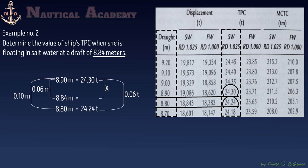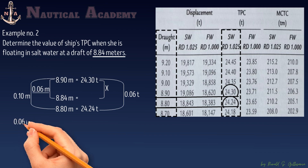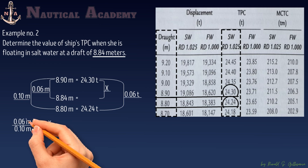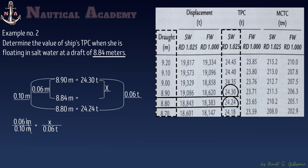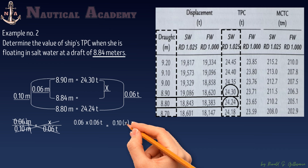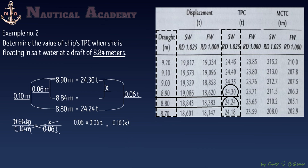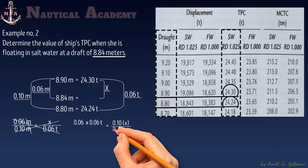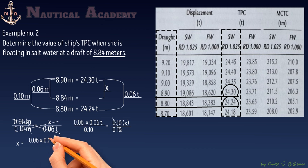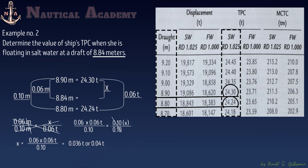We can now apply ratio and proportion. Let X be the difference in TPC between drafts 8.90 and 8.84 meters. So: 0.06 meter divided by 0.10 meter equals X divided by 0.06 ton. Cross-multiplying: 0.06 times 0.06 ton equals 0.10 times X. Transposing, X equals 0.06 times 0.06 tons divided by 0.10, which equals 0.036 tons, or approximately 0.04 ton, around 36 kilograms.